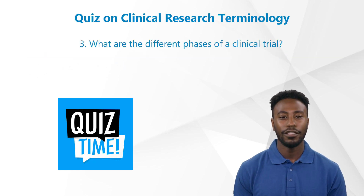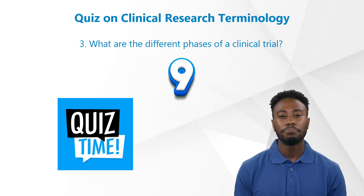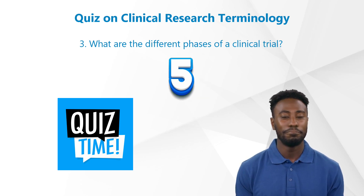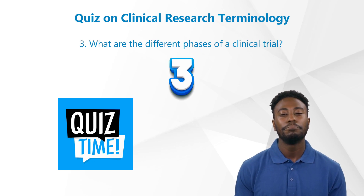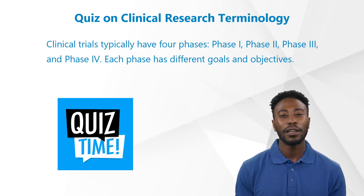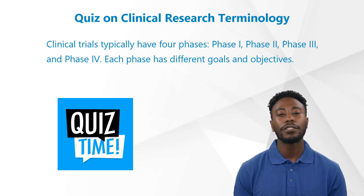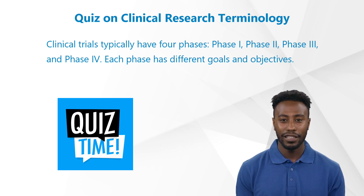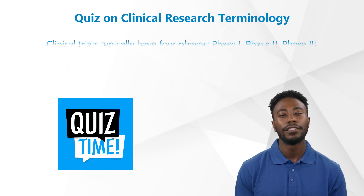Question 3: What are the different phases of a clinical trial? Clinical trials typically have four phases: Phase I, Phase II, Phase III, and Phase IV. Each phase has different goals and objectives. The phases are designed to answer specific questions about the safety and efficacy of the drug or treatment being tested.